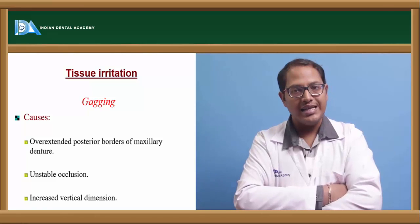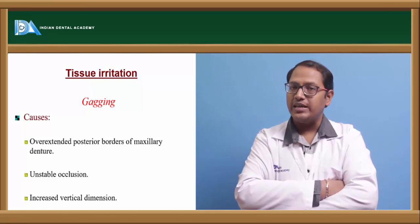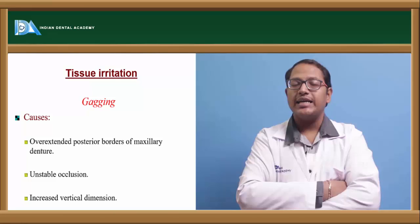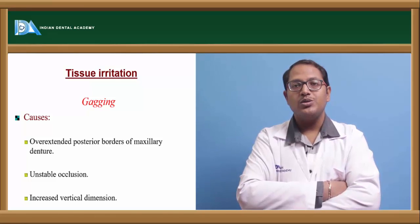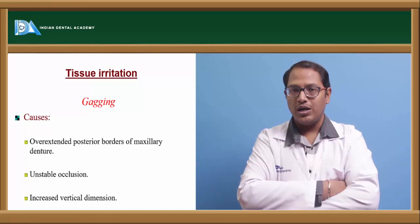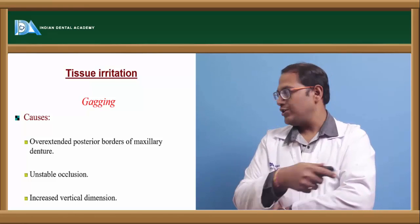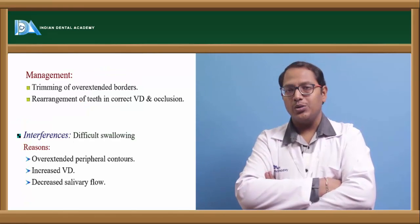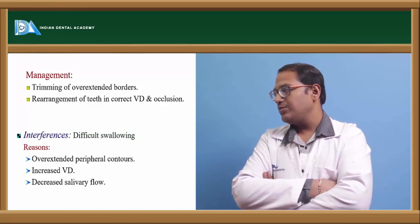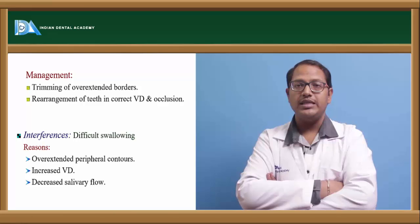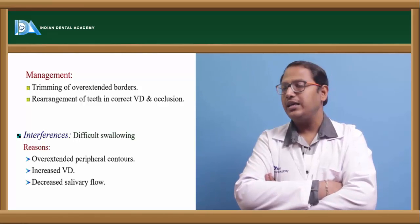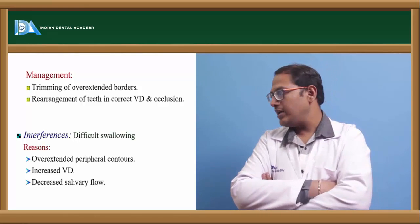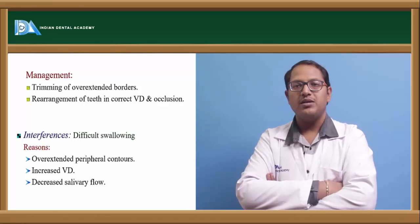Tissue irritation such as gagging occurs when the posterior palatal seal extension goes beyond the posterior vibrating line and encroaches into the soft palate or uvula — this significantly increases gagging. Mark the anterior and posterior vibrating lines correctly and correct the denture accordingly. Over-extension also creates an unstable occlusion. Management involves trimming over-extended borders and rearranging tooth contacts if required, or performing a complete rebasing if necessary.